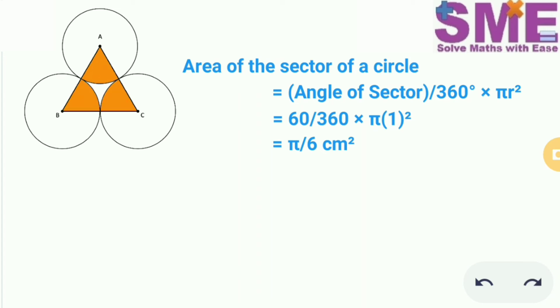So the area of these three sectors will be equal to 3 times of this area. So area of these three sectors is equal to 3 × π/6, which equals π/2 cm².